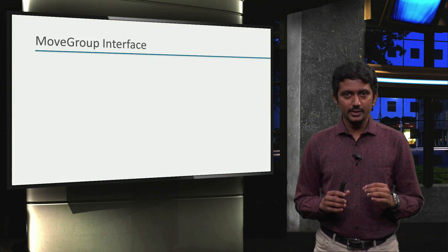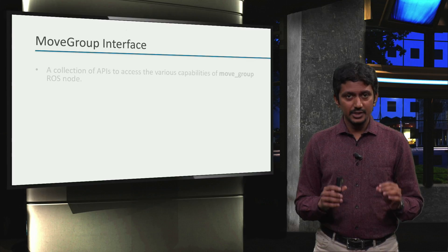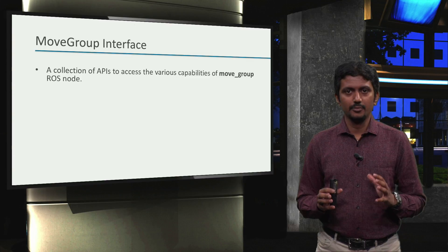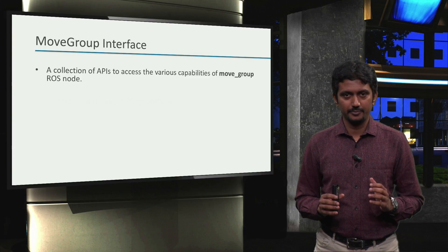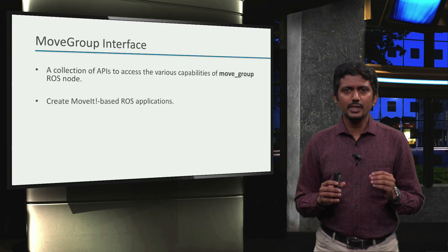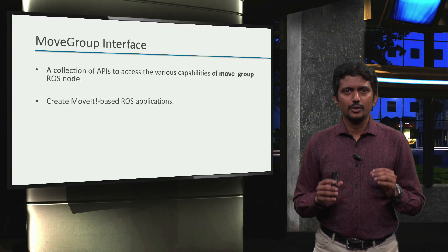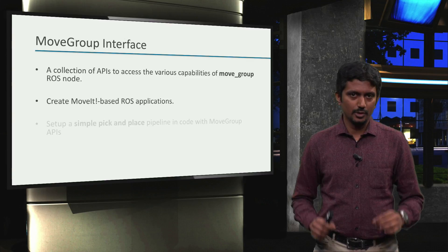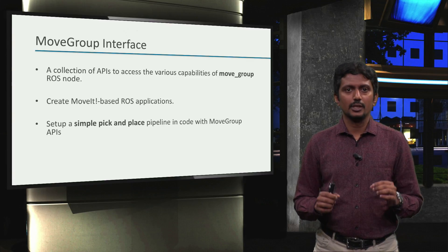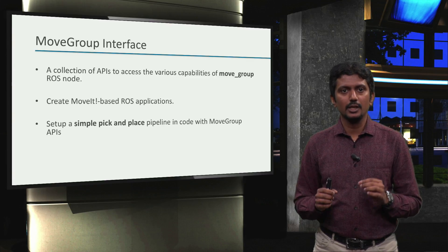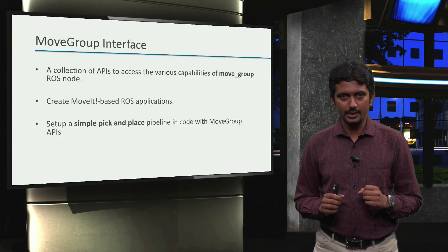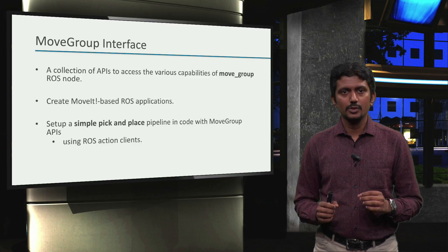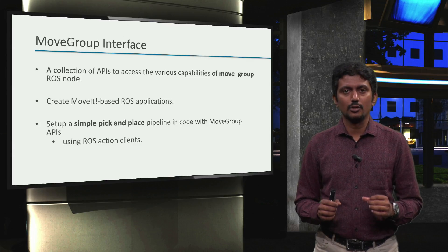The movegroup interface is a collection of APIs to access the various capabilities of the movegroup ROS node of moveit. We can use these APIs to create our own ROS-based moveit applications. For this module, the goal is to set up a simple pick and place pipeline in code with movegroup APIs, specifically using ROS action clients to talk to moveit.